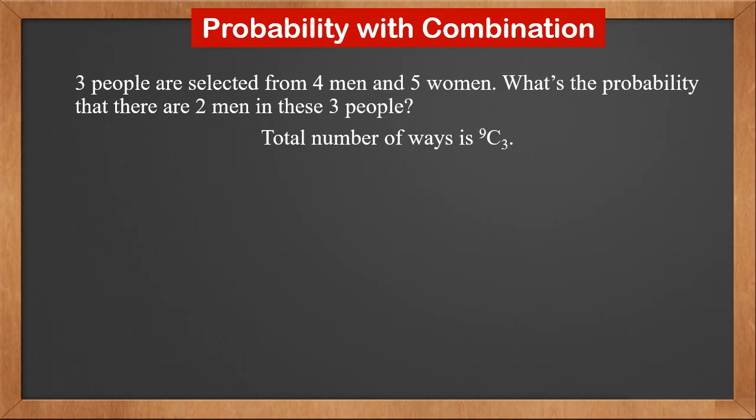The total number of ways of selecting 3 people out of 9, without any restriction, is 9C3. If 2 men are selected, then 1 woman is selected. The number of ways is 4C2 times 5C1.